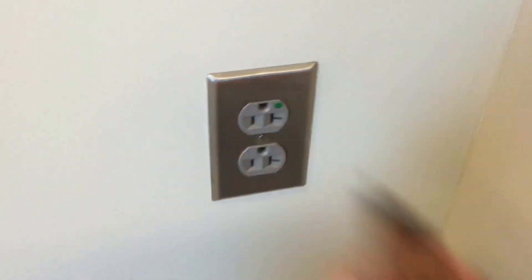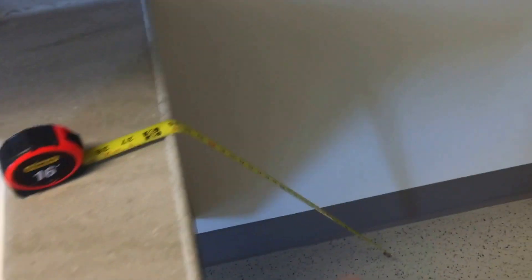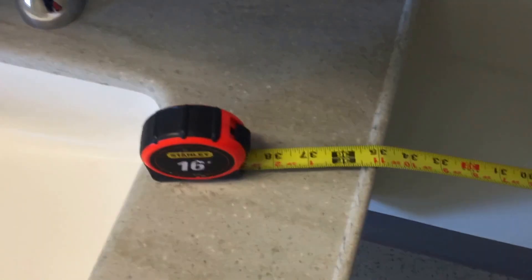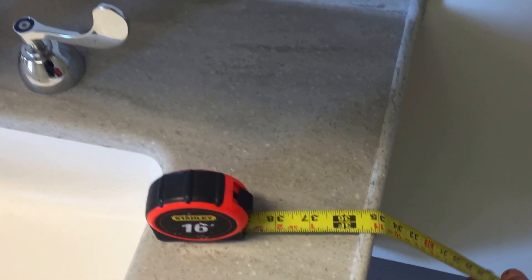And that's because that receptacle is right next to this sink. In fact, if I show you my tape measure, it's only about three feet away from the outside edge of that sink, and that's where the violation comes in.